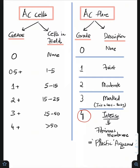Hi, today we will understand how to grade AC cells and AC flare. AC cells are going to be graded from 0 to plus 4. 0 being no cells in the field, 0.5 plus is 1 to 5, 1 plus is 5 to 15, 2 plus is 15 to 25, 3 plus is 25 to 50, 4 plus is more than 50.